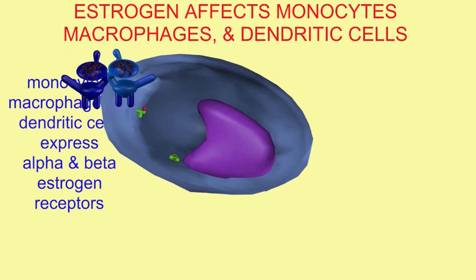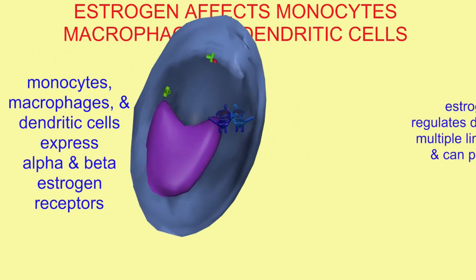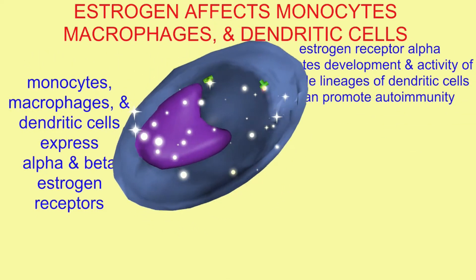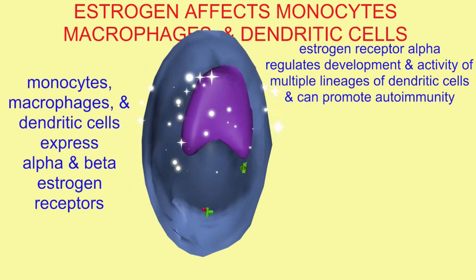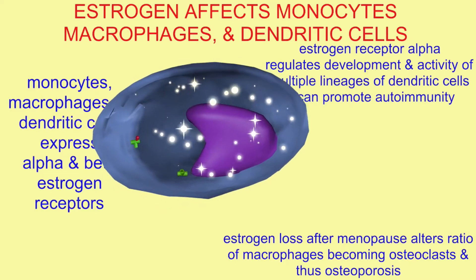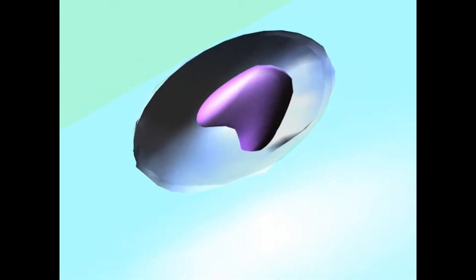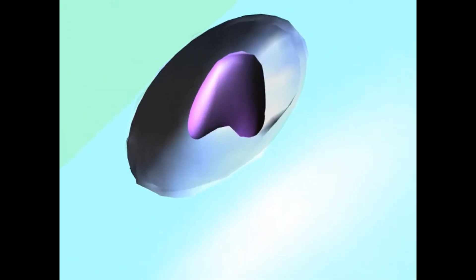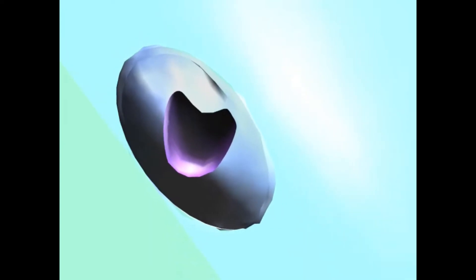Monocytes, macrophages, and dendritic cells express both alpha and beta estrogen receptors. Estrogen receptor alpha activity regulates the development and activity of multiple lineages of dendritic cells, such as plasmacytoid dendritic cells and others, and can promote their roles in autoimmunity.